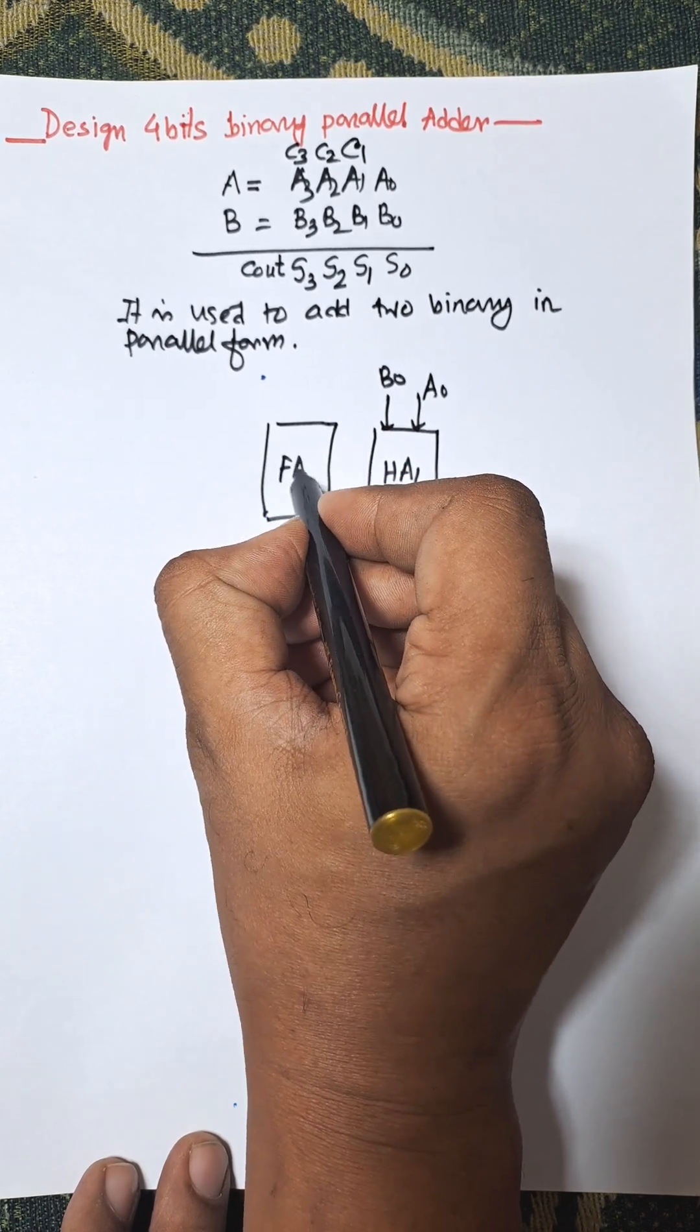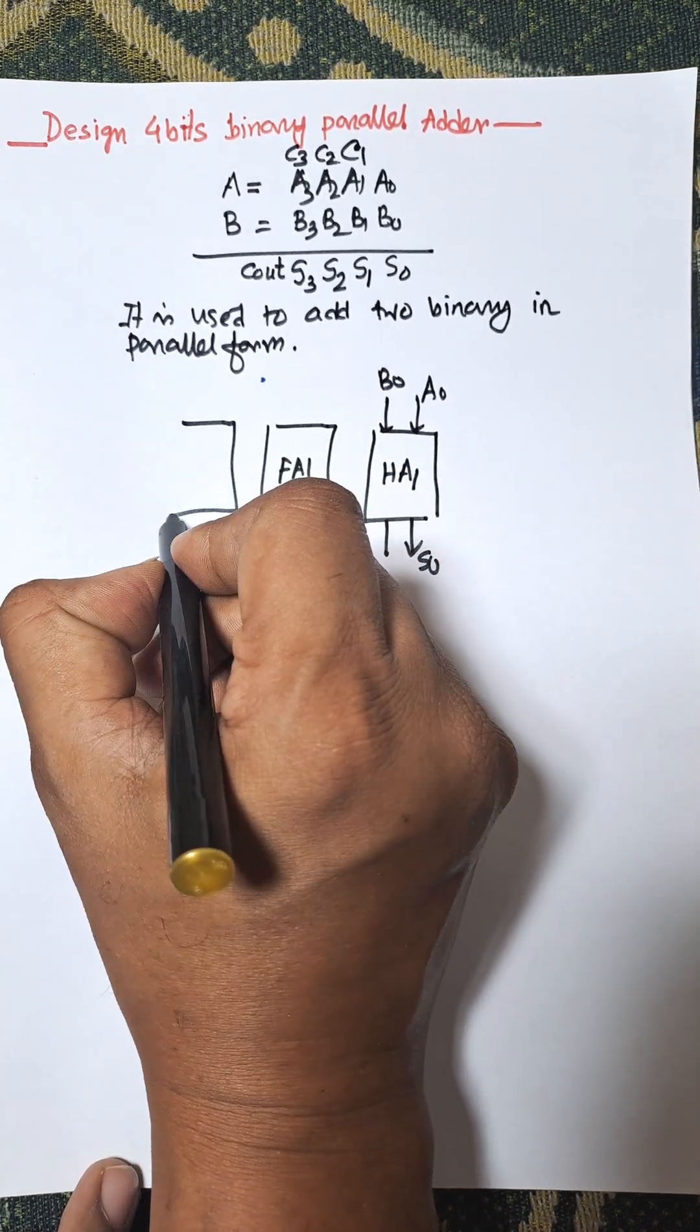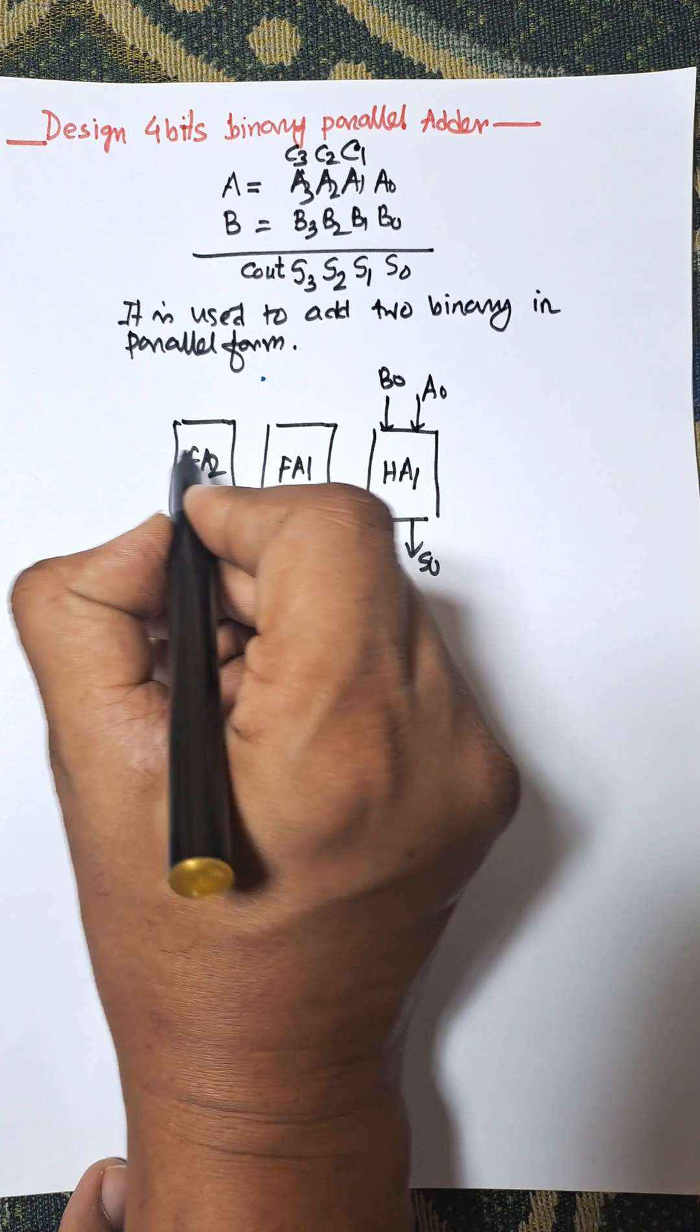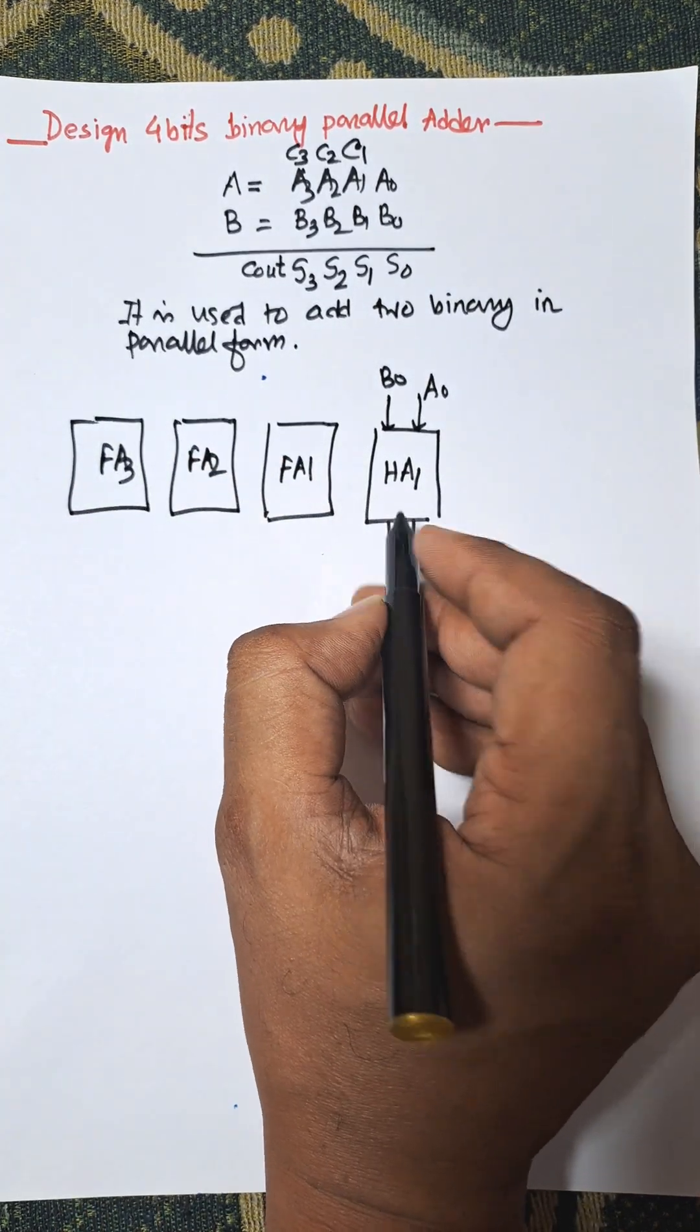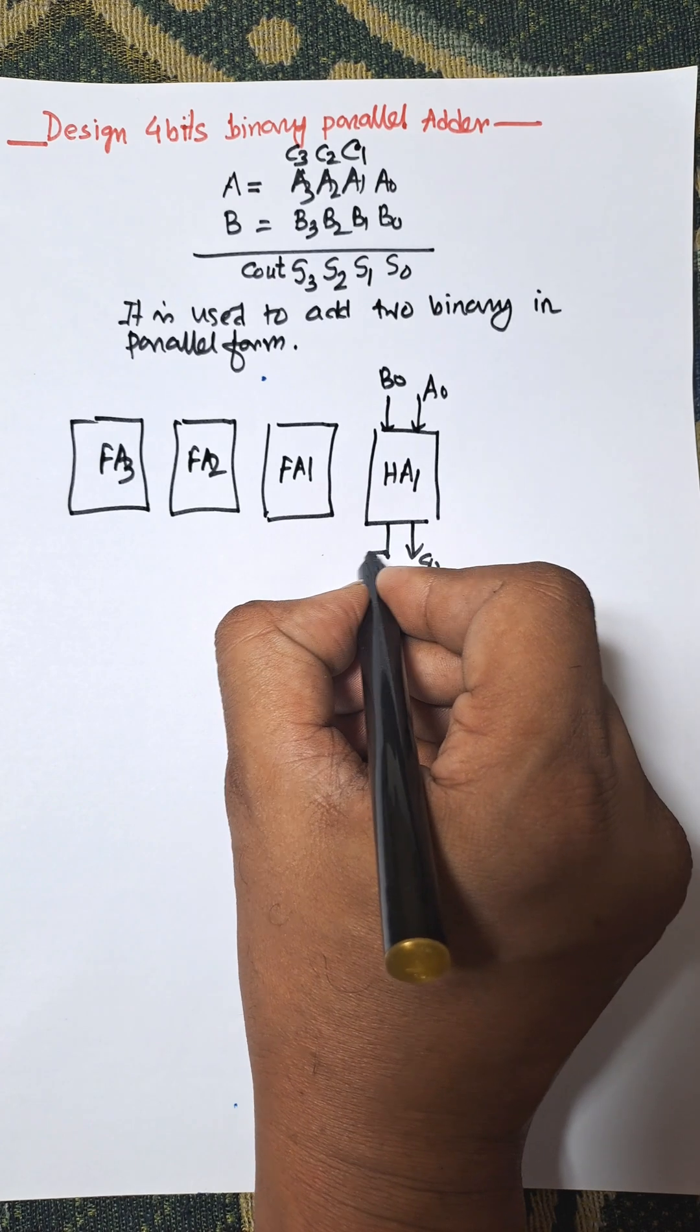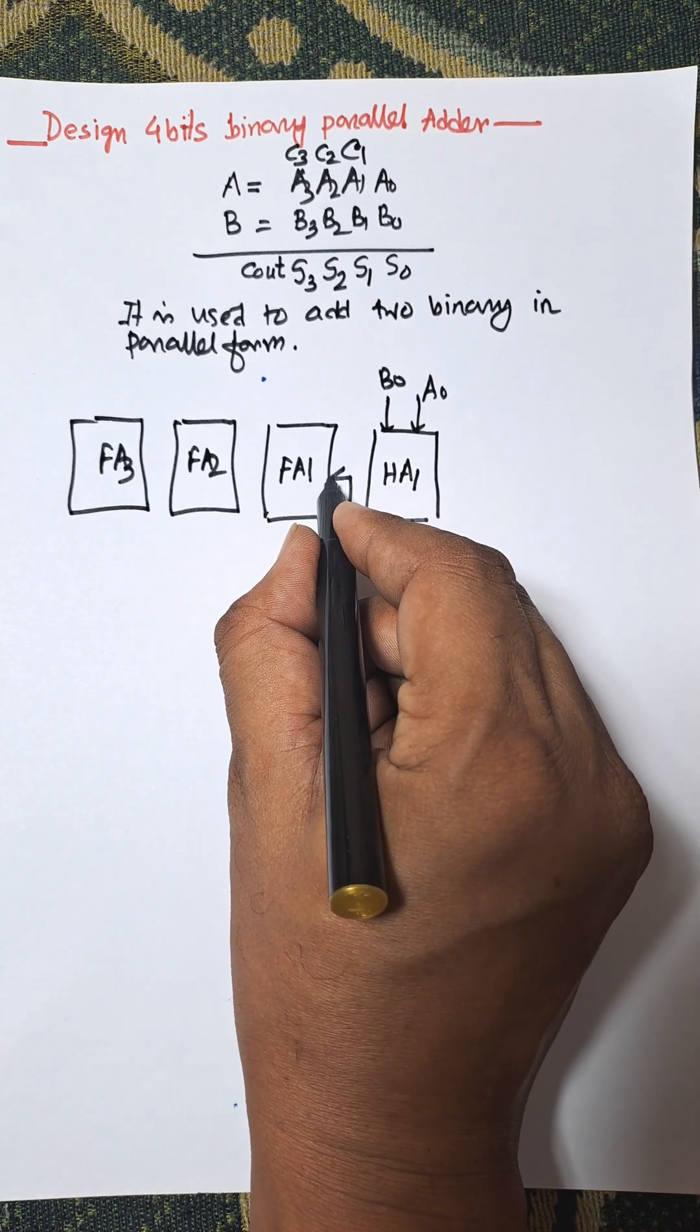This is full adder 1, full adder 2, and full adder 3. So there are three full adders and one half adder, and the carry goes to the next input of the full adder.